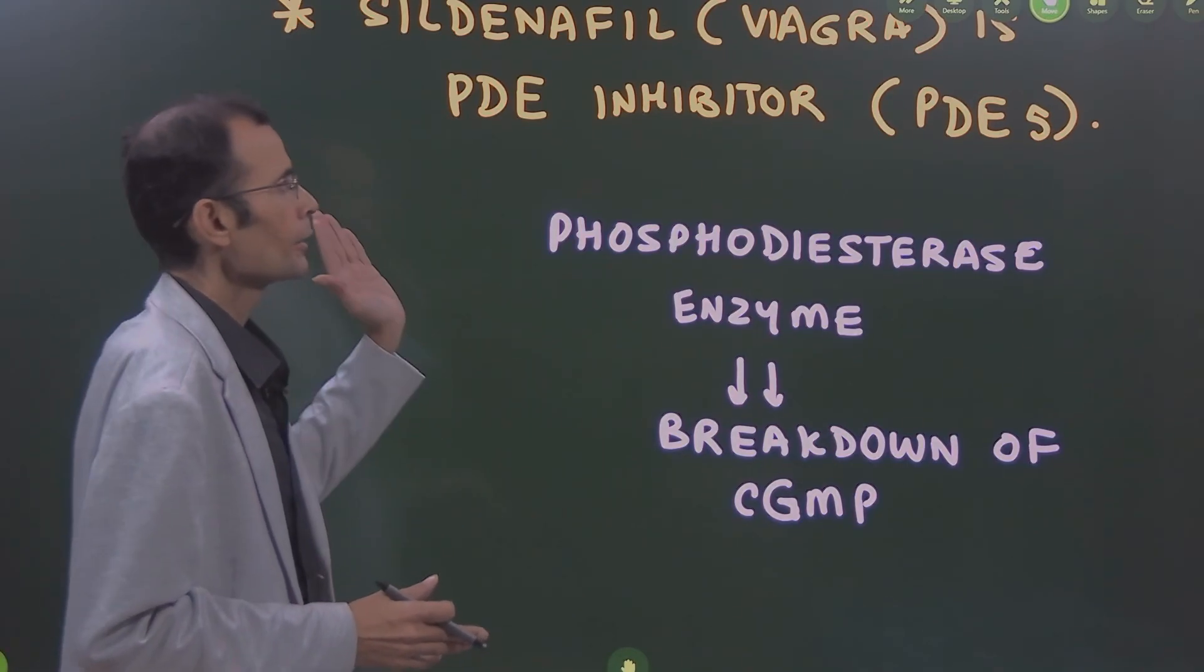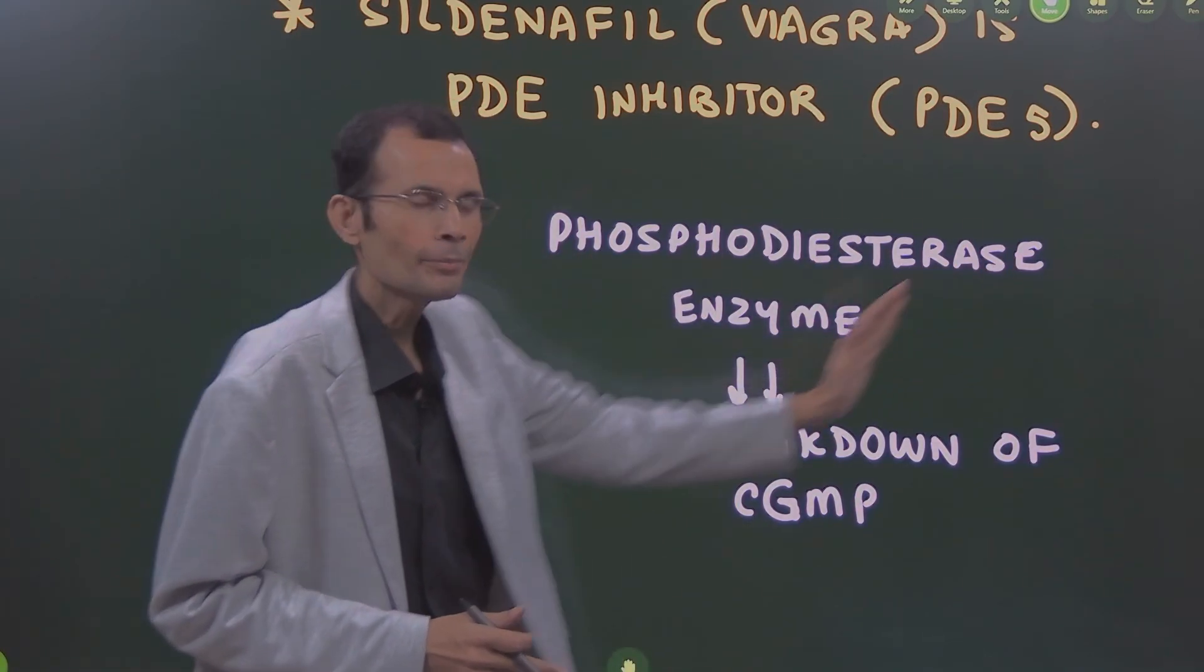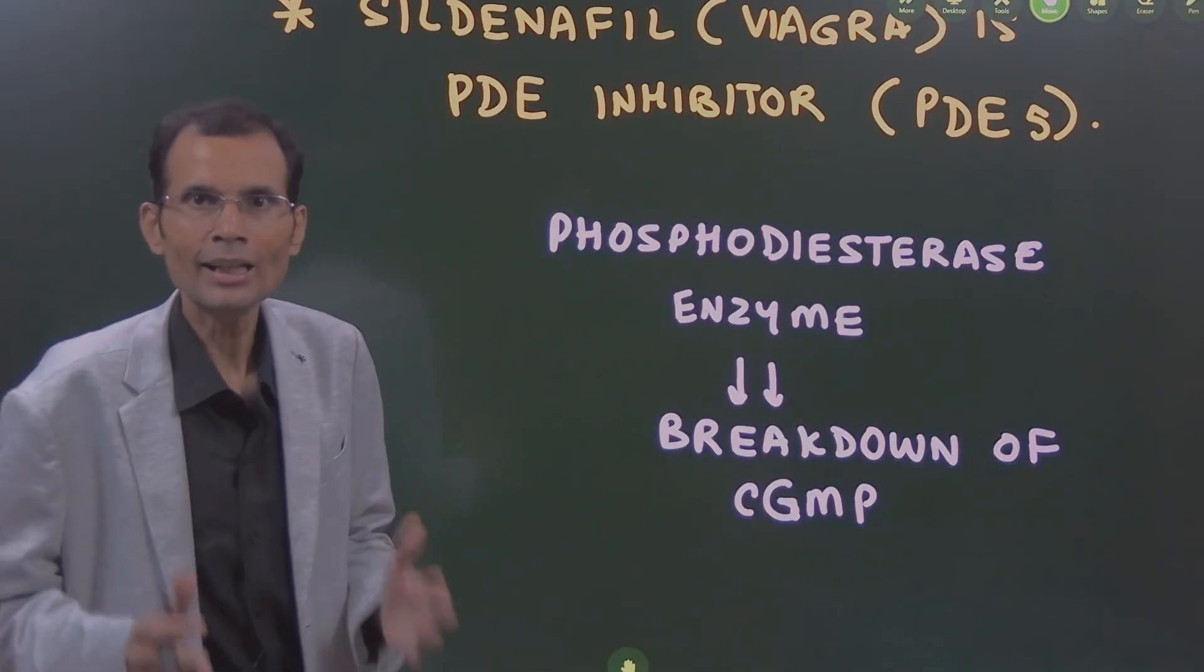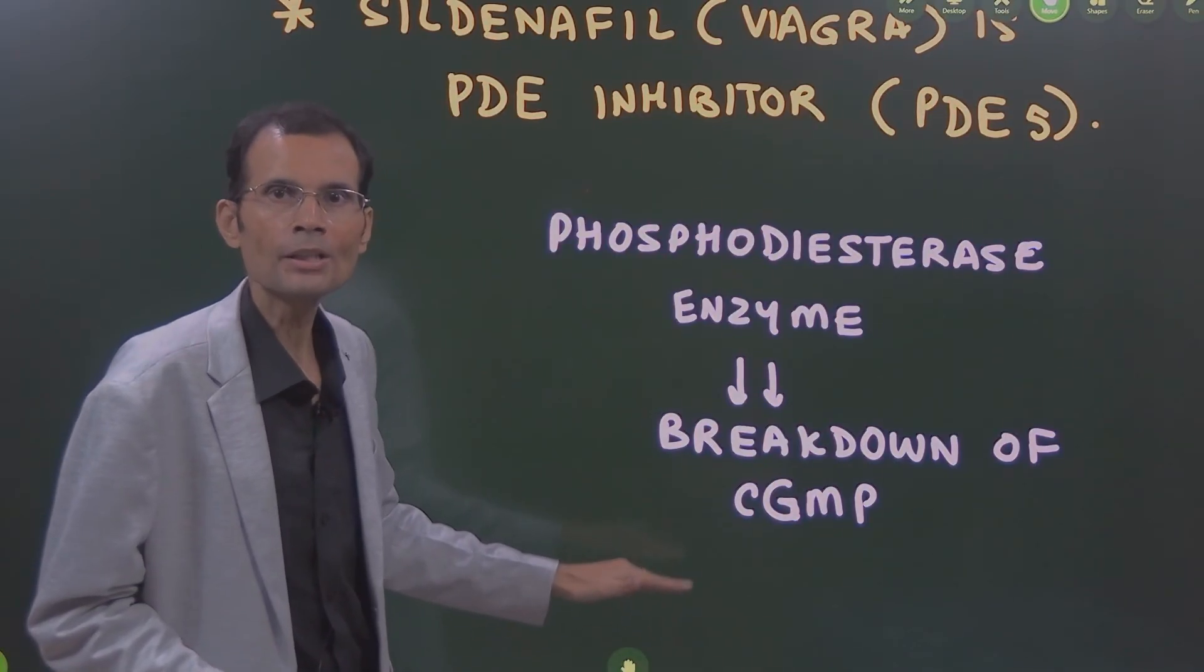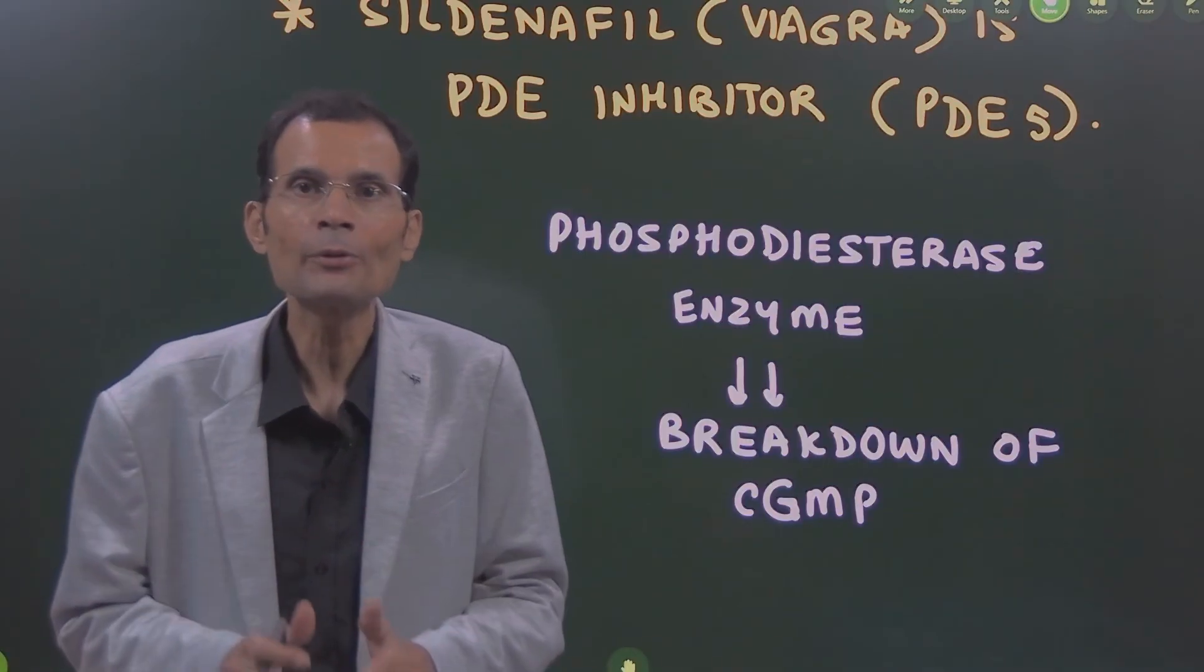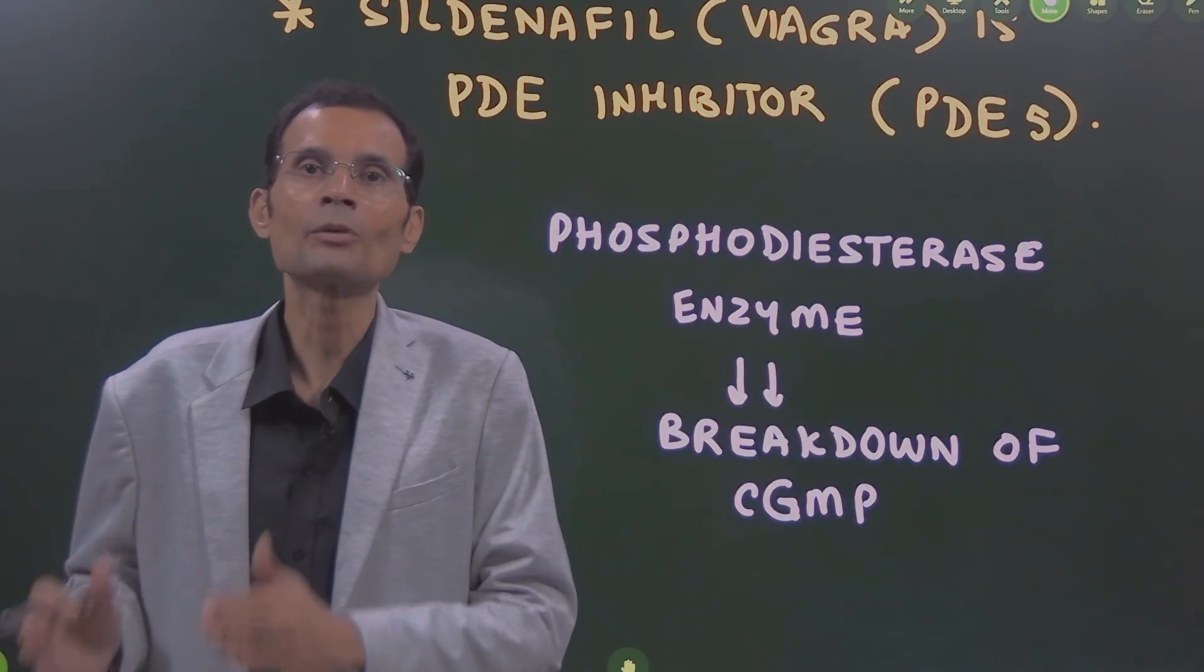It causes breakdown of cyclic GMP, and therefore this enzyme decreases the levels of cyclic GMP. Sildenafil, by inhibiting this enzyme, will not allow the breakdown of cyclic GMP. That means it results in elevation of cyclic GMP levels.